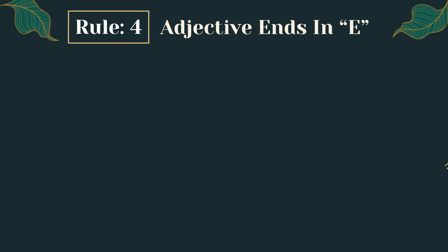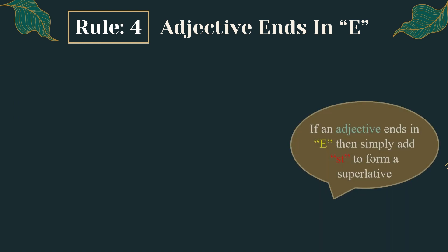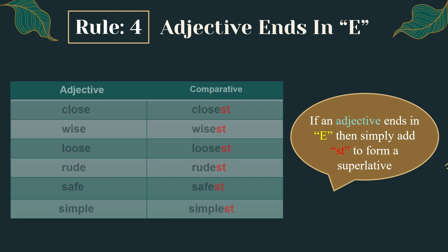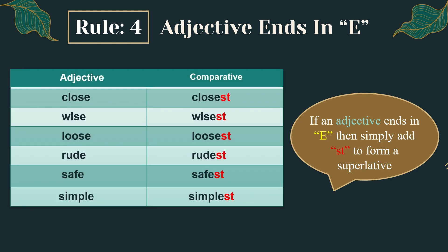Rule number four: adjective ends in the letter E. If an adjective ends in E, simply add -st to form the superlative. For example, 'close' ends in E, so we add -st: close → closest. Further examples: wise → wisest, loose → loosest, rude → rudest, safe → safest, simple → simplest.